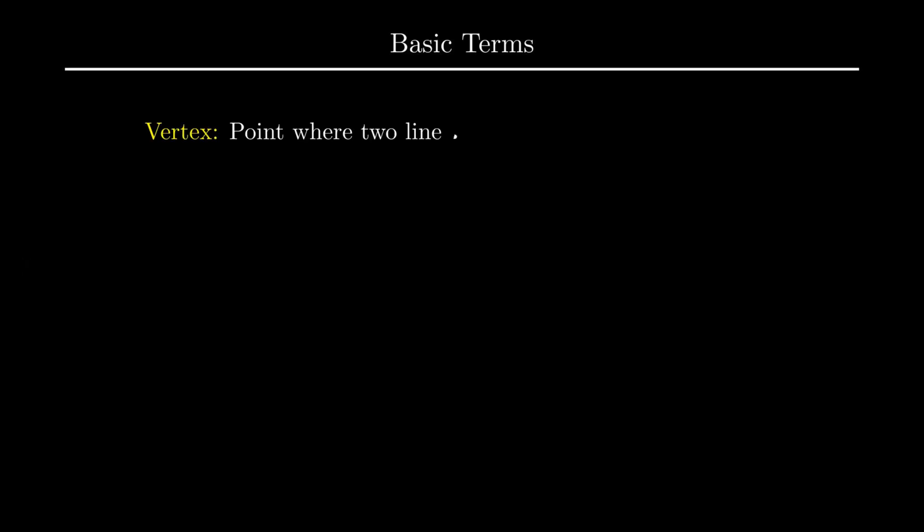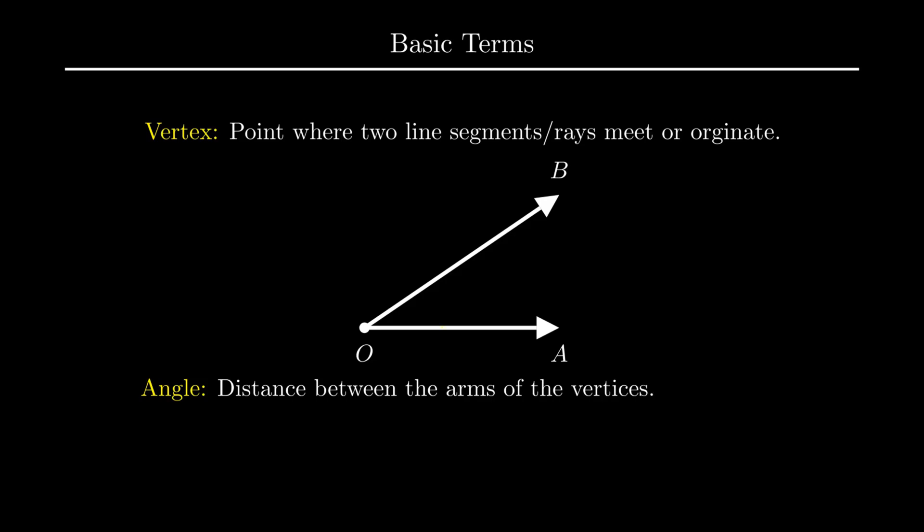Next is vertex. It is defined as a point where two line segments or rays originate or meet. Consider two rays OA and OB with same initial point O. Here point O is called the vertex. Each vertex results in the formation of an angle which is defined as the distance between the arms of the vertices. To denote an angle, the vertex is written at the center while the arms are mentioned as per alphabetical order. So here the name of the angle formed is angle AOB.